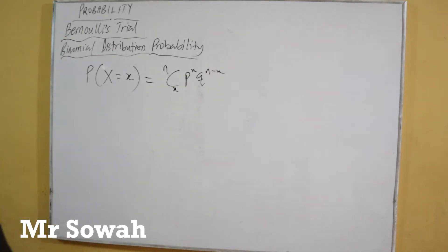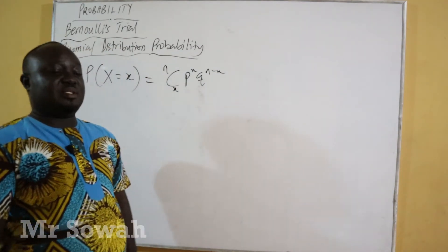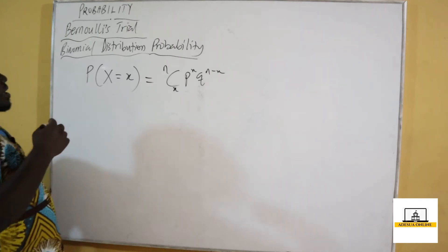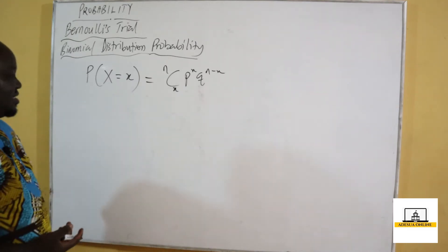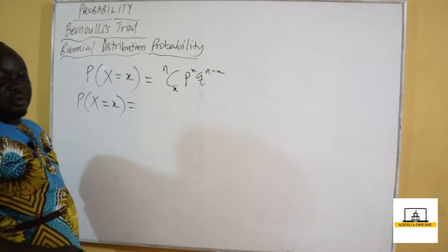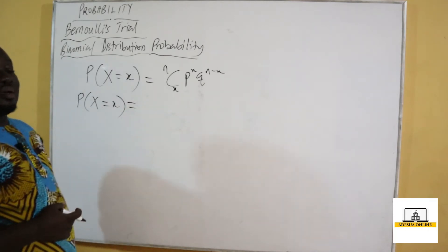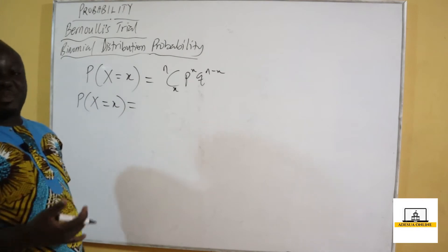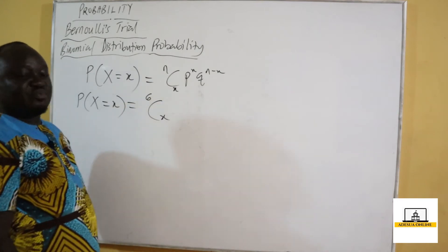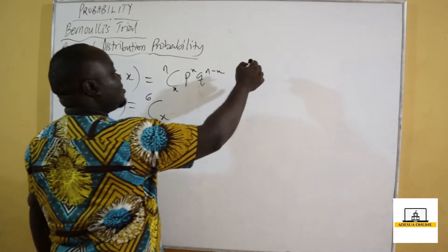In the above question, we are told that a factory produces parts of a machine and one out of every ten parts produced is found to be defective. We are going to write down our binomial probability. In a sample of six such parts, our n is equal to six. We are told one out of ten is defective, so p is equal to one over ten.